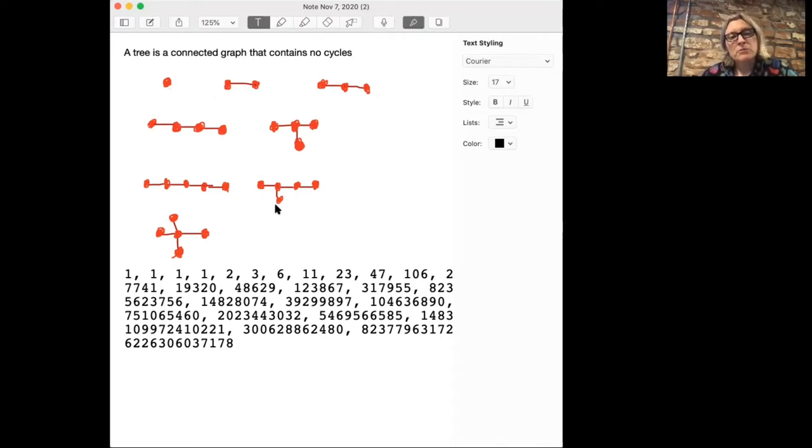You can start trying to classify these things based on the largest, longest path from one vertex to another, or based on the degrees of the vertices. There are lots of different ways of classifying these. Unfortunately some of this went off the page, but this sequence counts the number of unlabeled trees on n vertices starting with n equals zero. Here are the cases n equals one, two, three. I also drew the cases n equals four and n equals five.